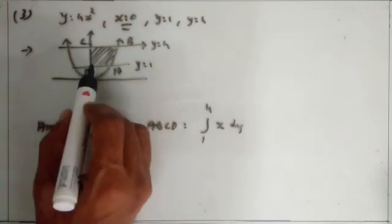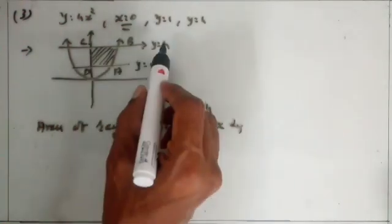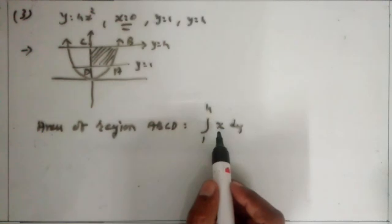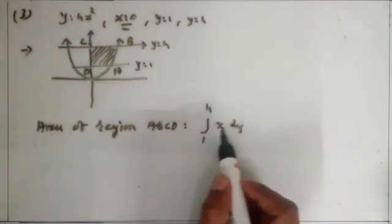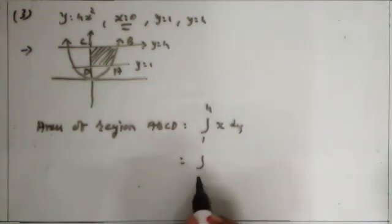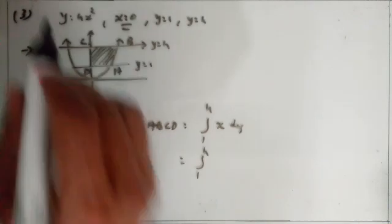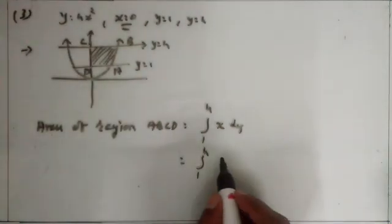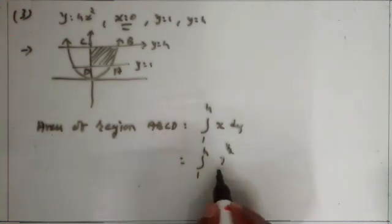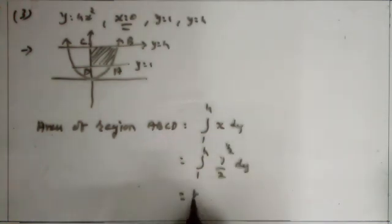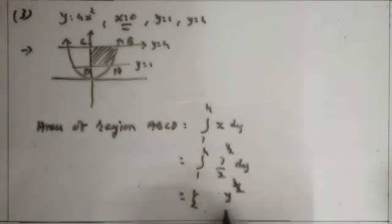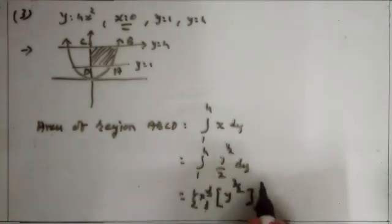So integration from 1 to 4: here x is equal to — take 4 to this side and apply square root on both sides — so we get y raised to 1 by 2 upon 2, dy. So it is equal to 1 by 2. Integration of y raised to 1 by 2 is equal to y raised to 3 by 2 upon 3 by 2. Apply limit 1 to 4.